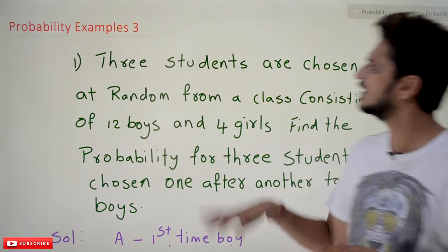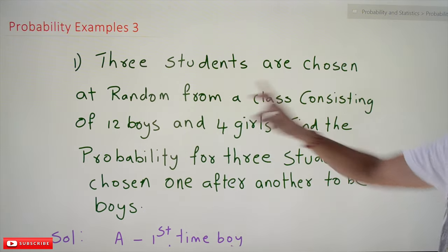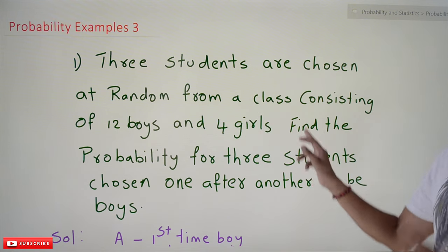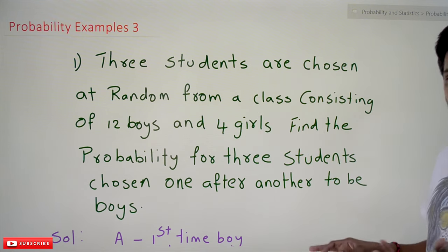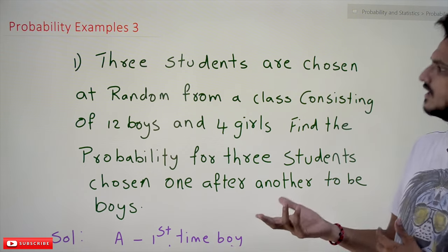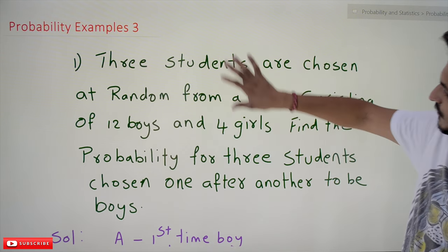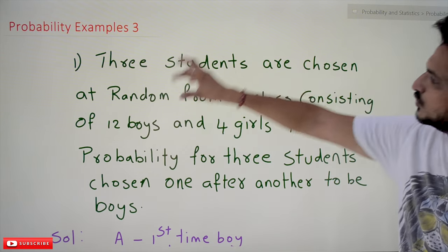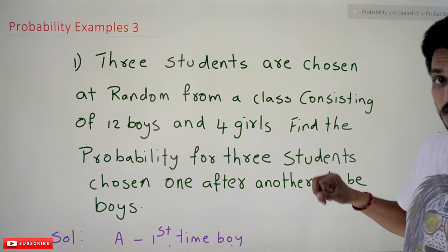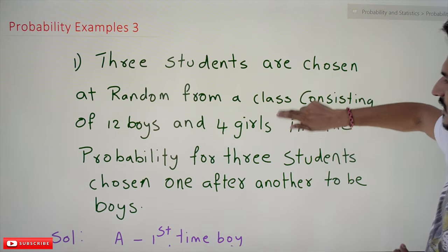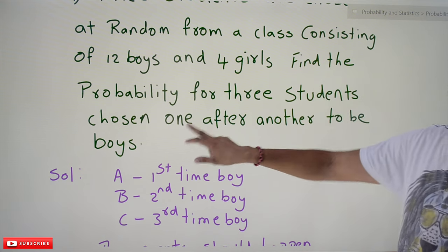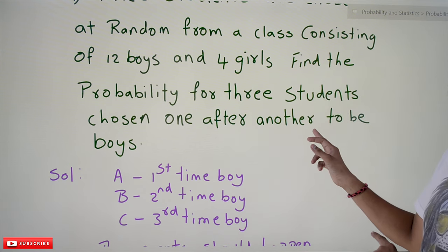Coming to our first example: three students are chosen at random from a class consisting of 12 boys and 4 girls. Out of those 12 boys and 4 girls, three students have been chosen. Find the probability for three students chosen one after another.